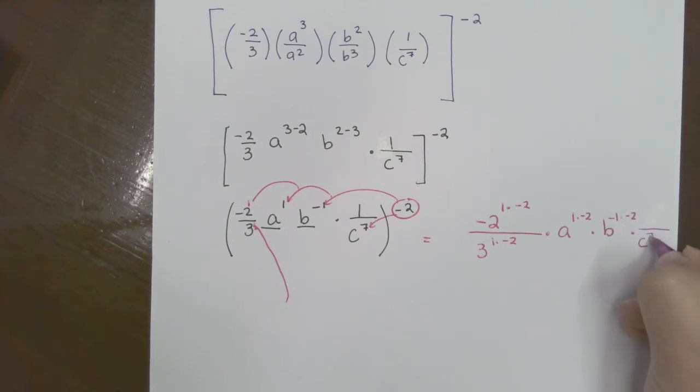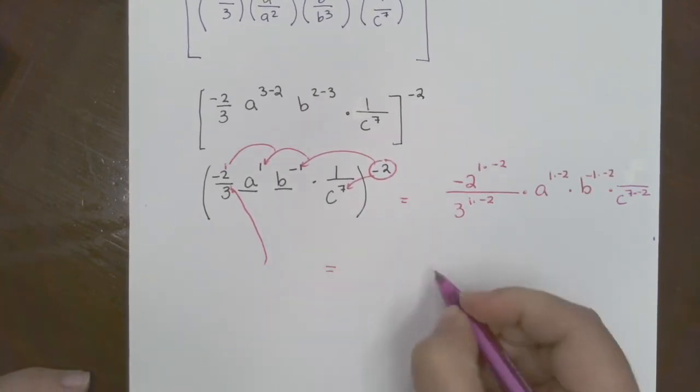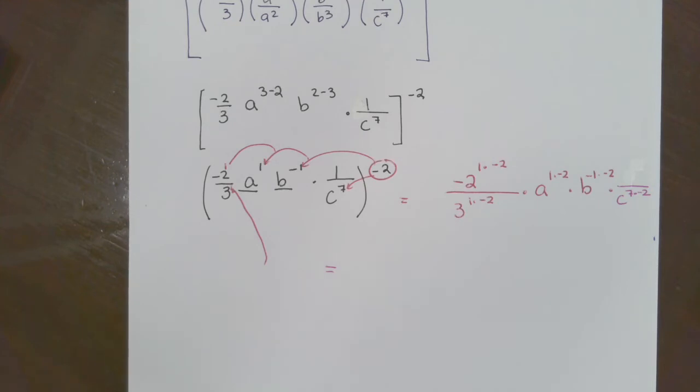So we got negative two one times negative two over three one times negative two, times a one times negative two, times b negative one times negative two, times one to the negative two power. Again, you don't really have to deal with one realistically. It's not there. It's just like a placeholder. So I'm going to quickly erase that so I don't confuse you with that. It's not there.